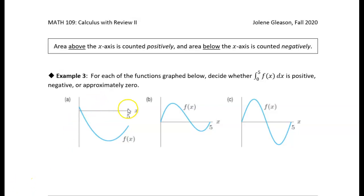So one of the key takeaways from this section is just that area above the x-axis is counted positively and area below the x-axis is counted negatively.